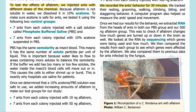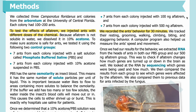For our study, the test groups were: seven ants from each colony injected with 10 nanograms of aflatrem; seven ants from each colony injected with 50 nanograms of aflatrem; seven ants from each colony injected with 100 nanograms of aflatrem; and seven ants from each colony injected with 500 nanograms of aflatrem.